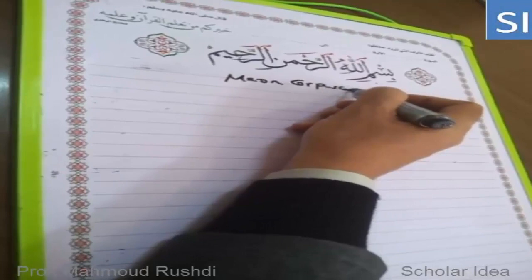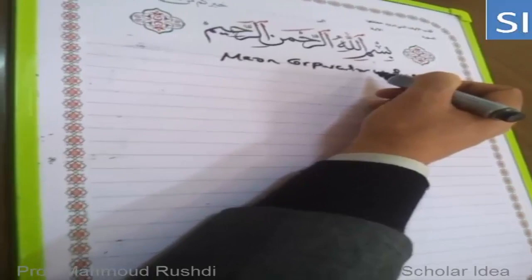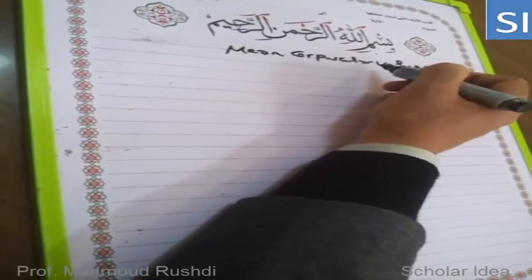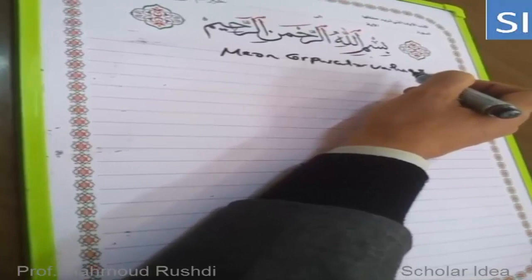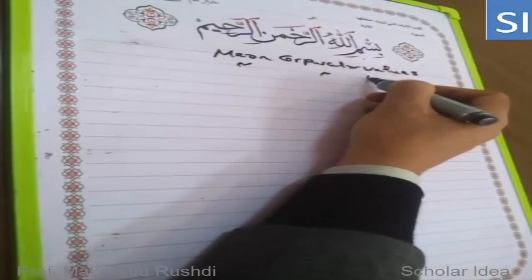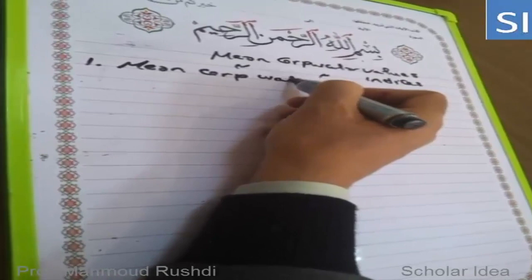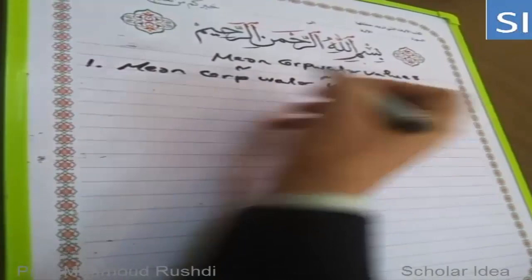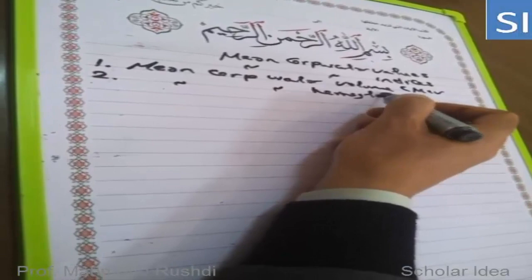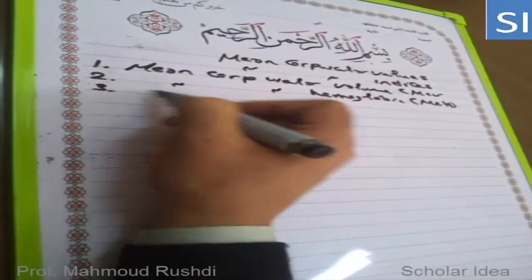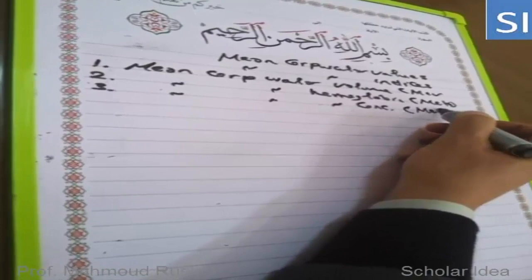Mean corpuscular values are very important when evaluating red blood cells. These values are used to classify anemia according to size and according to state, also called the weight. Corpuscular analysis includes three parameters: number one, mean corpuscular volume (MCV); number two, mean corpuscular hemoglobin (MCH); number three, mean corpuscular hemoglobin concentration (MCHC).